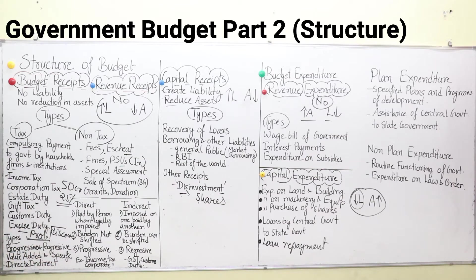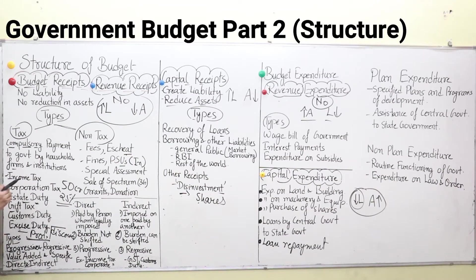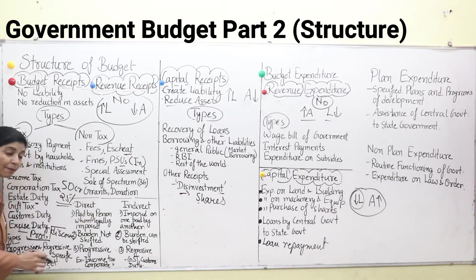Value added tax is a tax levied on the value added by any producer on a particular commodity. For example, in the manufacture of bread, the value added by the baker or bakery on the bread is taxed, and that is known as value added tax. The amount of value added is taken into consideration when any commodity is taxed. Now, direct and indirect taxation — the differentiation of direct and indirect is very important and may come in exams. We are discussing all these points briefly, as in 12th standard you don't need detailed discussion.